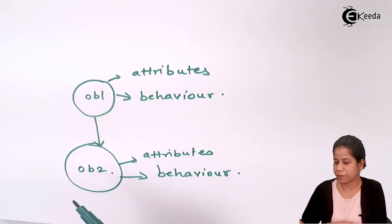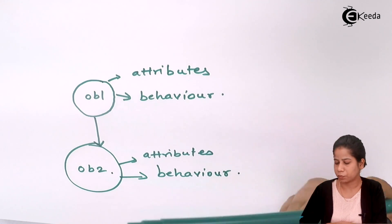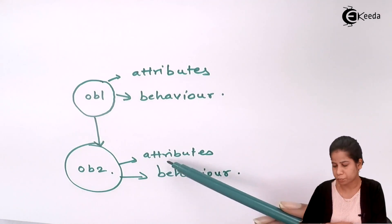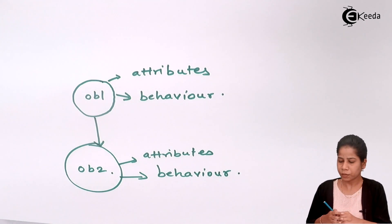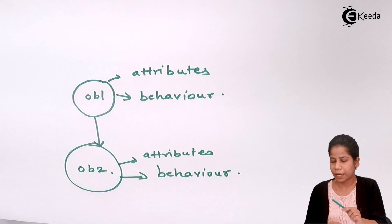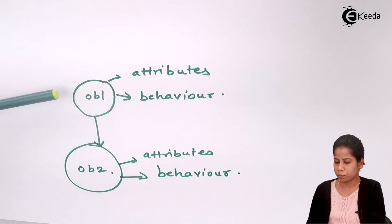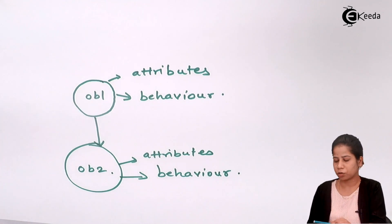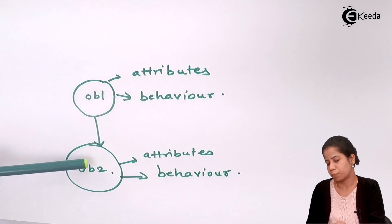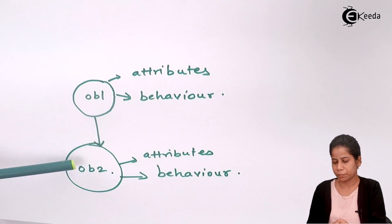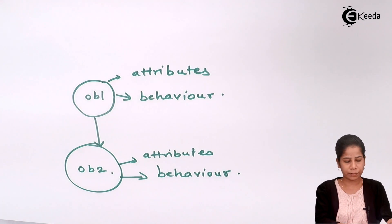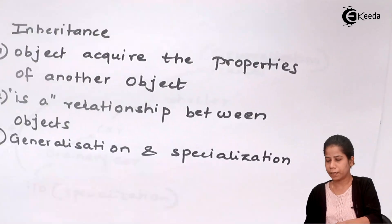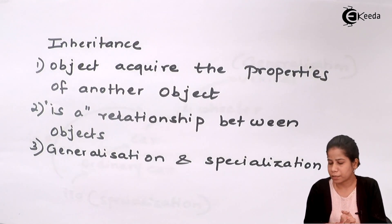So object two will be having the attributes and behavior of object one, as well as its own attributes and behavior. I'm acquiring the properties of object one and also having my own specialized properties of object two. So inheritance means an object acquires the properties of another object.